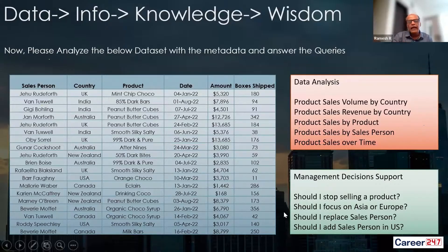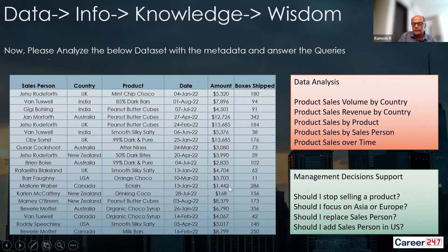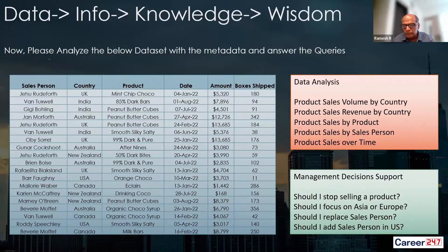Isko bahut bada system hai. And agar CEO na puchhe ki bhai, mein kaunse product ko stop karun? Mera jo smooth, silky, salty bikini bar hai, ya sabse lowest figures jo hai ye drinking coco pe aa raha hai — mujhe band karna chahiye. Toh mera paas data hai, mein usko bol sakta hoon ki sir, aap ye jo drinking coco hai, yeh bahut hi sabse kam sales ho raha hai, uska box bhi bahut kam hai — toh aap isko stop kar dijiye. Example ke liye. Sir, India mein sabse zyada sales badh raha hai, aapka trend jo India mein badh raha hai, Europe mein kam ho raha hai — toh aap zyada sales person India mein dalo, Europe se kam kar do. This is wisdom.